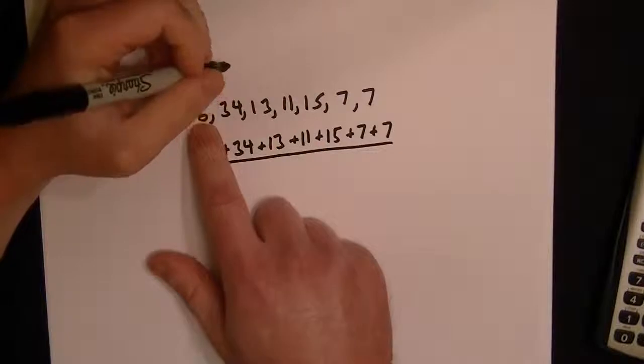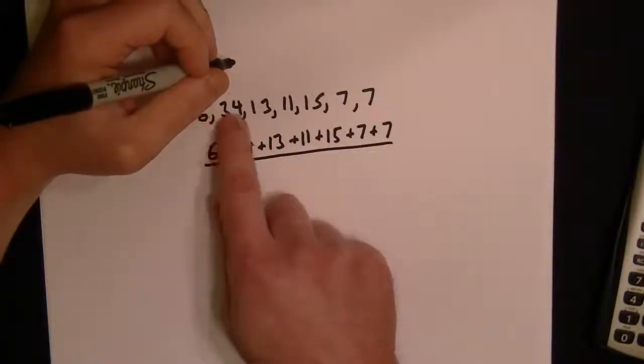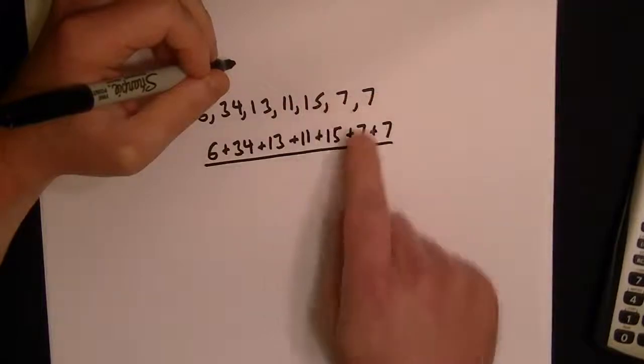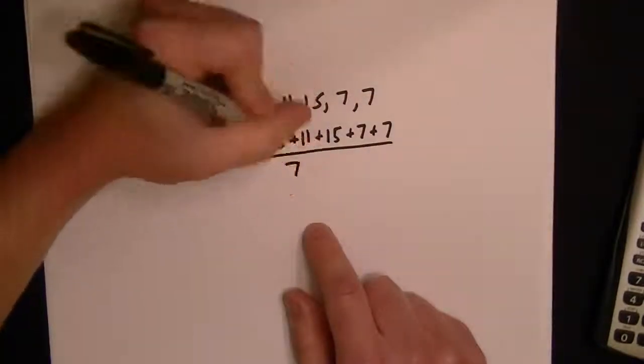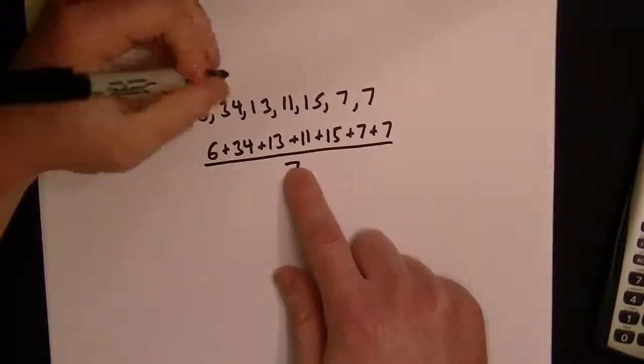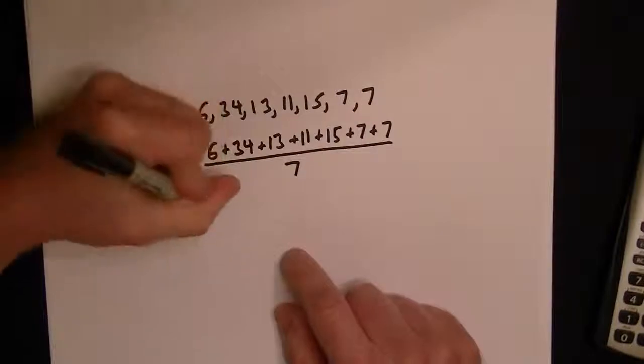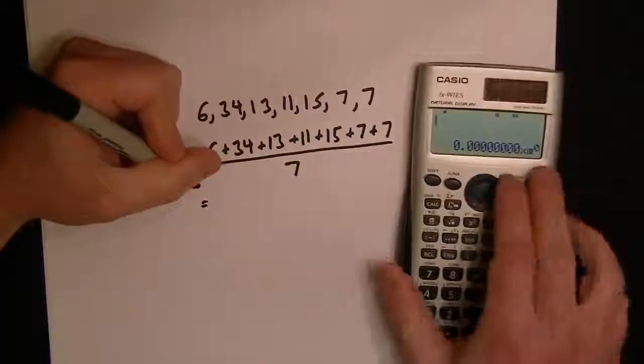You just count how many numbers you're summing: 1, 2, 3, 4, 5, 6, 7. We've got seven numbers in total. This seven has nothing to do with these sevens; it's just the fact that we've got a list of seven numbers.